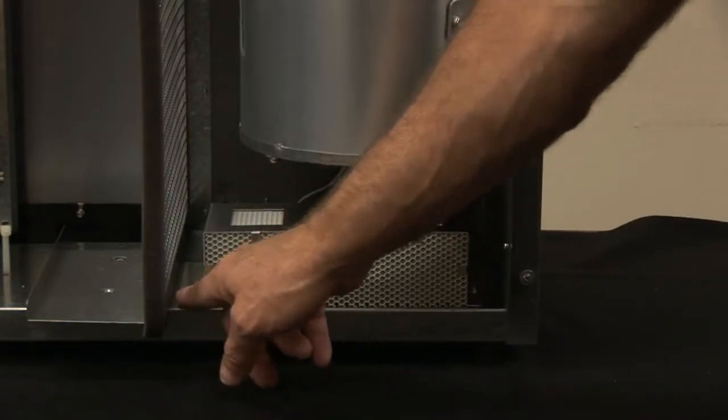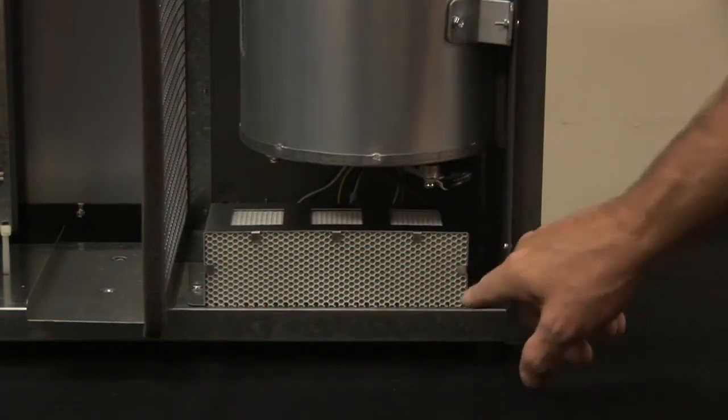Locate the two points where the honeycomb cover is secured. To remove the cover, first lay the Guardian Air on its back.